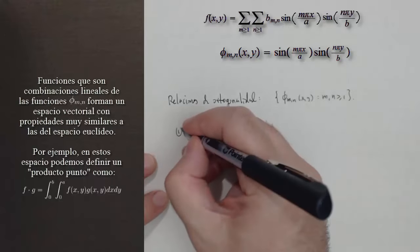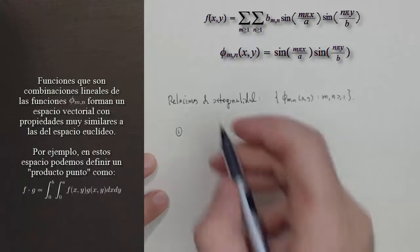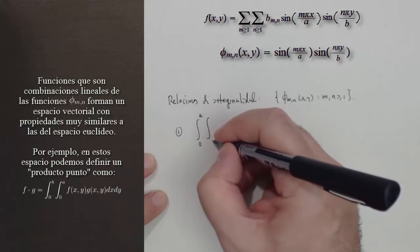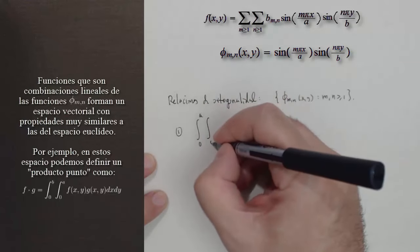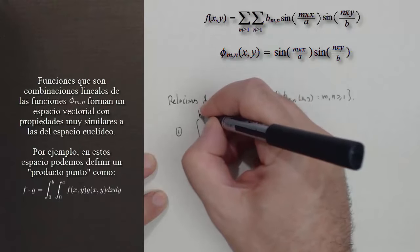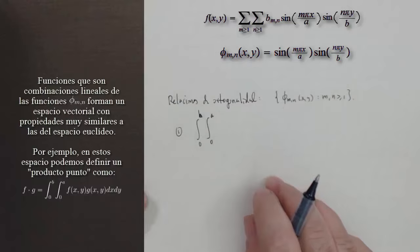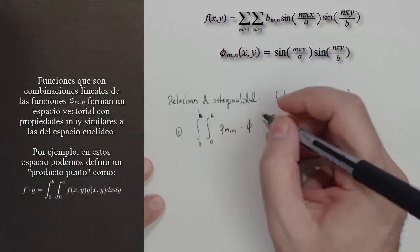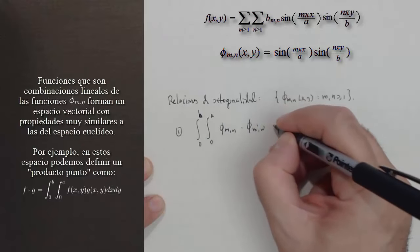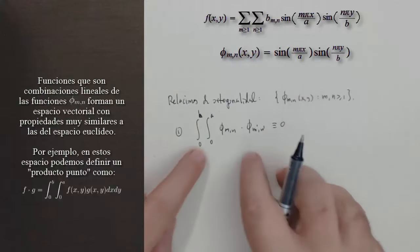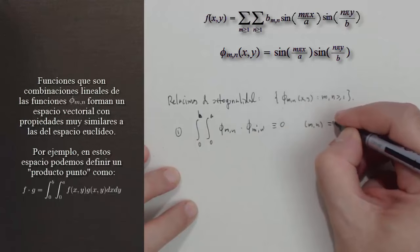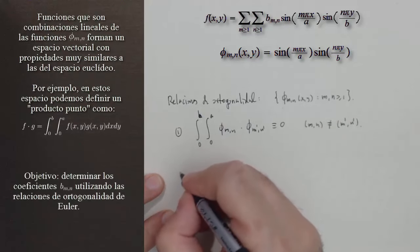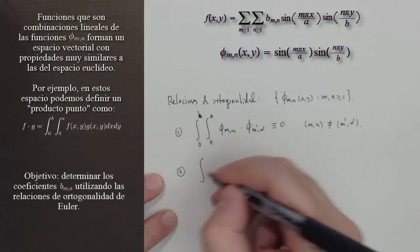Las relaciones de ortogonalidad, si pensamos que las integrales son una especie de producto interno, la primera relación nos dice que la integral entre 0 y A, y la integral entre 0 y B, de Phi por Phi en otro par de índices M', N', va a ser 0. Estas dos son ortogonales; este producto es 0 cuando la parejita MN es distinta de la parejita M'N'.